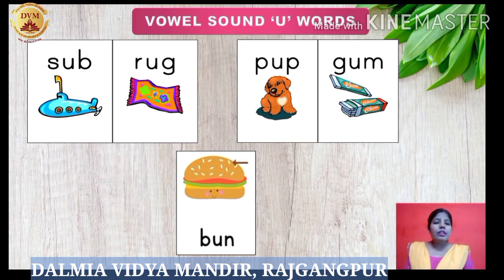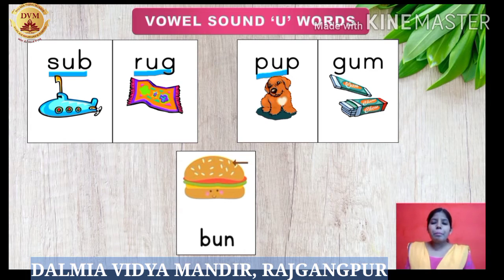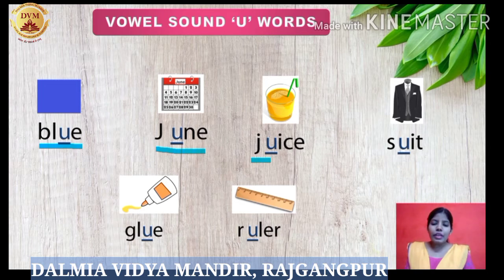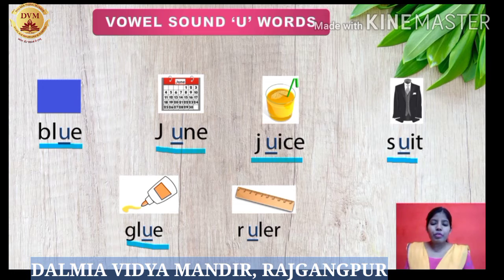Here we have sub – S U B – sub. This is for the submarine. R U G – rug. P U P – pup. G U M – gum. B U N – bun. Here we have B L U E – blue. J U N E – June. J U I C E – juice. S U I T – suit. G L U E – glue. R U L E R – ruler.